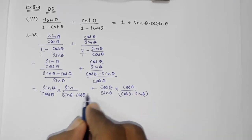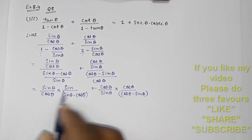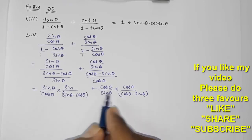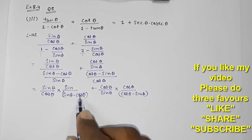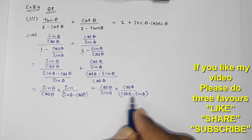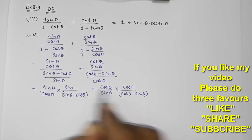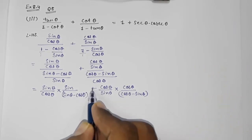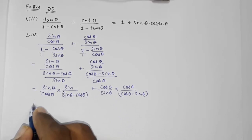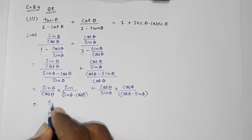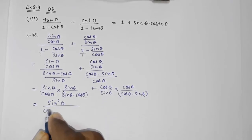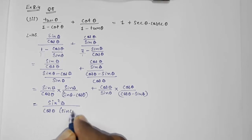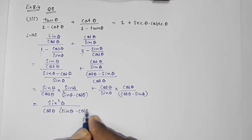Now a big problem arises here. If I want to find the LCM, one denominator is sin θ minus cos θ and the other is cos θ minus sin θ — these are not the same. To make them the same, I am going to take out minus common from cos θ minus sin θ and multiply it. So plus, minus, minus gives us: sin² θ upon cos θ into bracket sin θ minus cos θ, minus cos² θ upon sin θ into bracket sin θ minus cos θ.